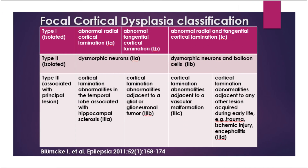Focal cortical dysplasia is a common cause of epilepsy and can be divided into three types. Focal cortical dysplasia type 1 is a malformation presenting with abnormal cortical layering, either compromising radial migration and maturation of neurons (FCD type 1a), or the six-layered tangential composition of the neocortex (FCD type 1b). FCD type 2a presents with disrupted cortical lamination and specific cytologic abnormalities including dysmorphic neurons.